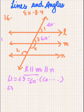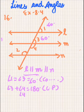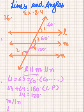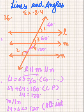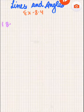Now angle 3 plus angle 4 will be equal to 180 degrees because these are making a linear pair. Angle 3 is 60, so angle 4 will be 120 degrees. Since M is parallel to N, angle 4 will be equal to angle 2, which equals 120 degrees, because these are alternate interior angles. Hence we have found angle 2 as 120 degrees.